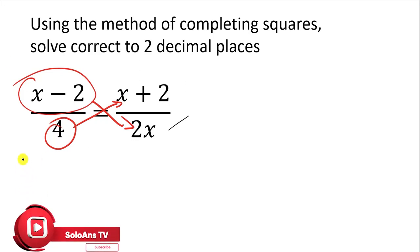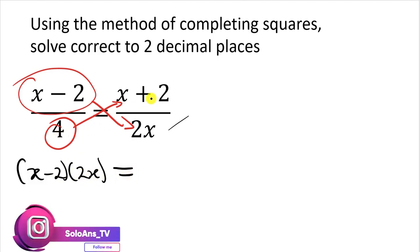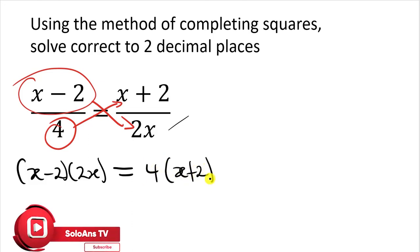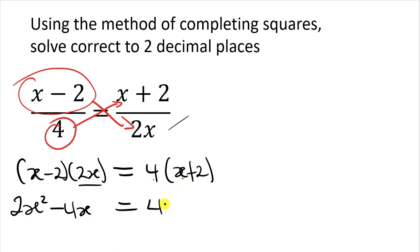So we are going to get our (x minus 2) multiplying the 2x, and that 4 also multiplies the (x plus 2). Now the next step is to expand. So 2x multiplies x — that gives us 2x squared. The same 2x multiplies the minus 2, giving us minus 4x. Then 4 multiplies x, giving us 4x.